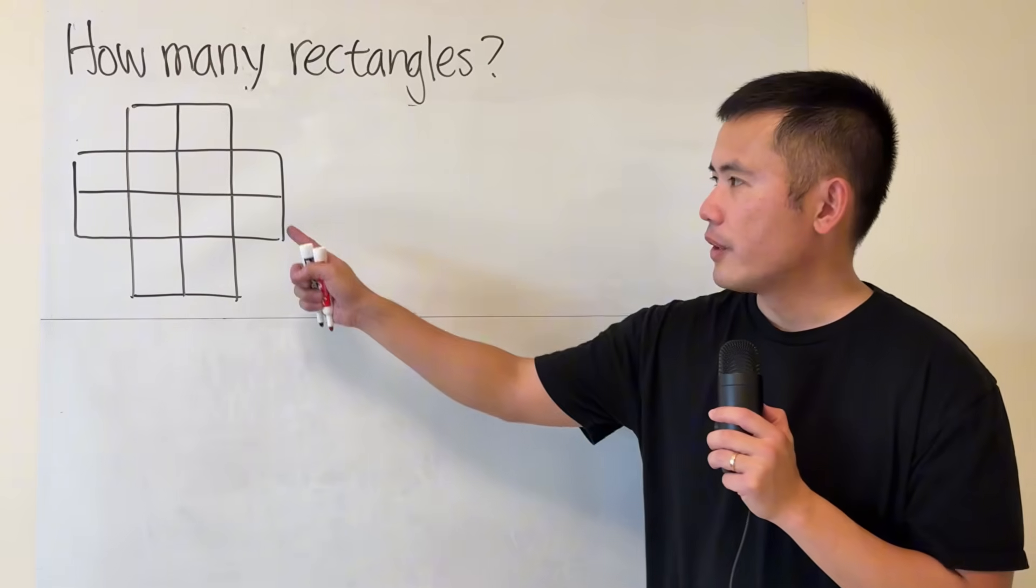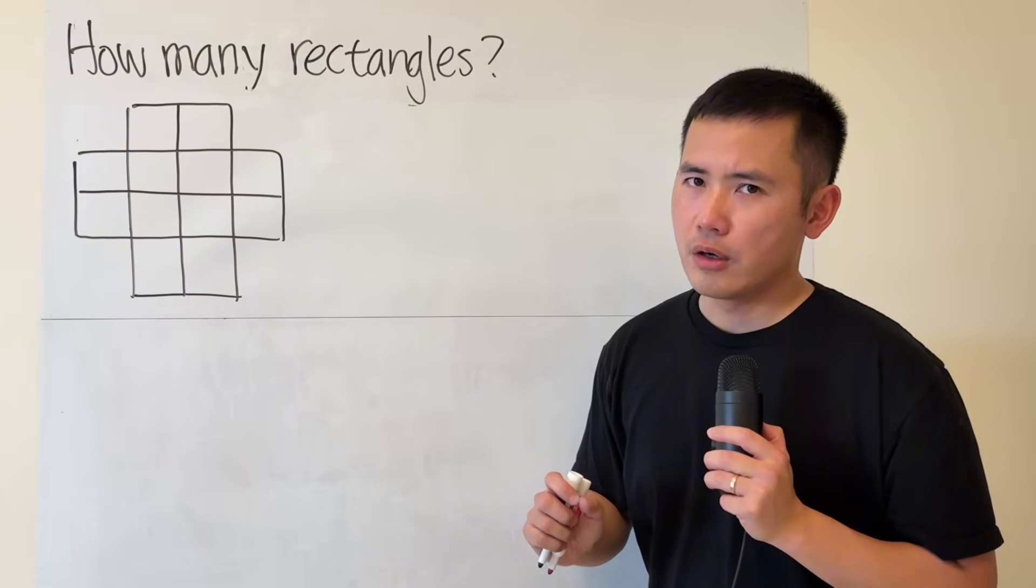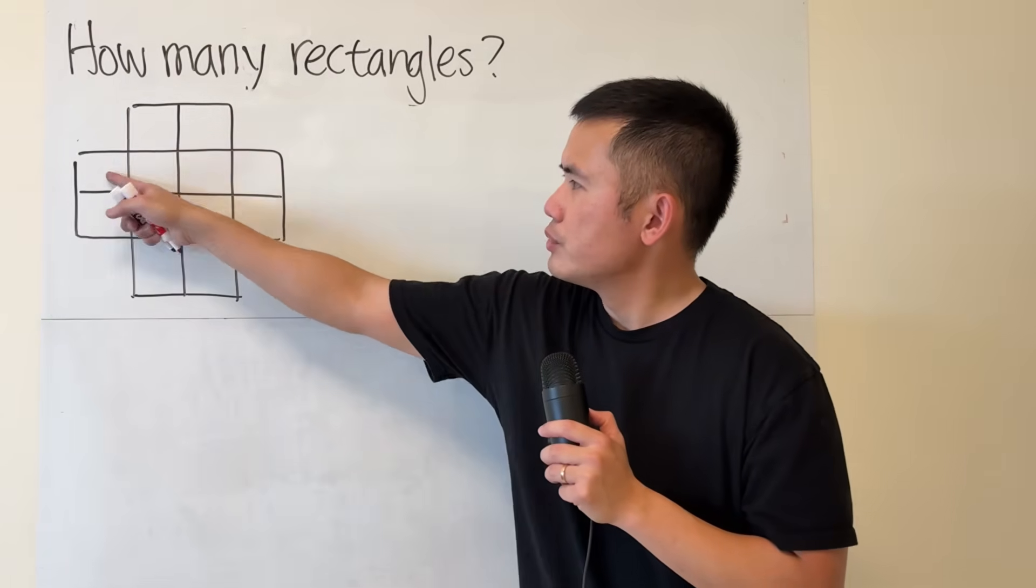So how many rectangles do we have from this figure right here? And remember, a square is also a rectangle. So, 1, 2, 3,